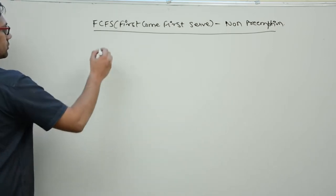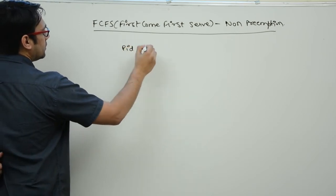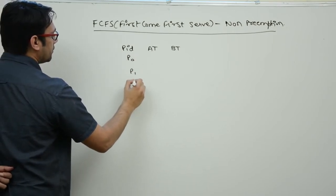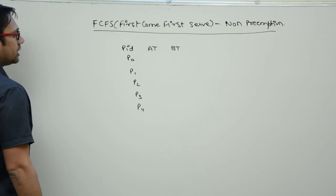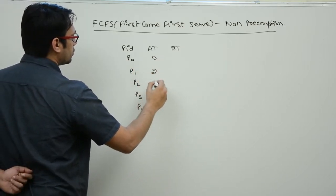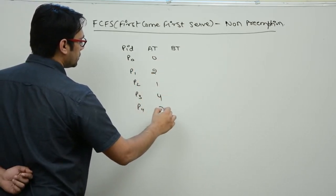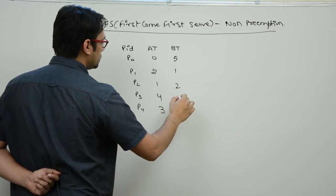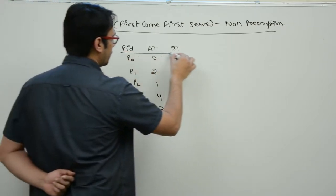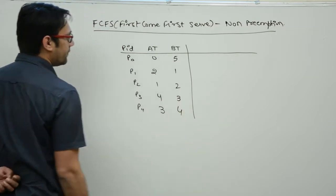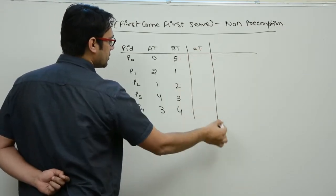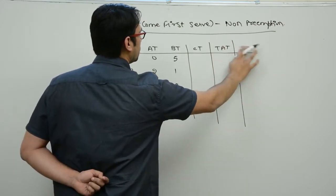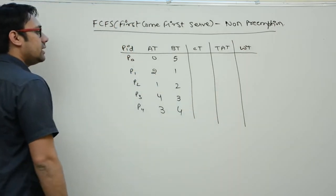Let us assume these are our process IDs: P0, P1, P2, P3, and P4. The arrival times are 0, 2, 1, 4, and 3, and the burst times are 5, 1, 2, 3, and 4. Using this data, our aim is to find the completion time, the turnaround time, and the waiting time for each process.